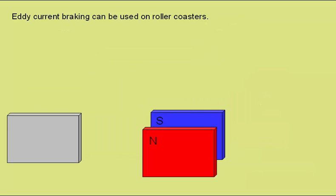Eddy current or induction braking can be used on roller coasters. Here we have a block of aluminium, which would be attached to a moving part, one of the cars in the roller coaster, and here a pair of permanent magnets, which would be attached to the frame.